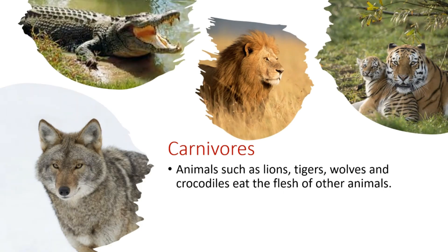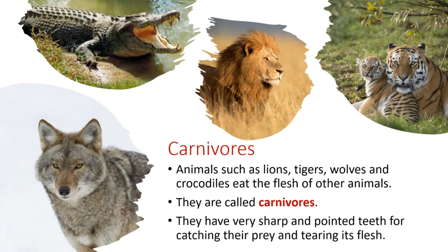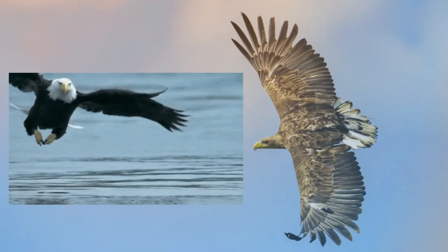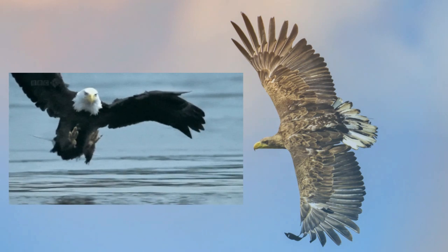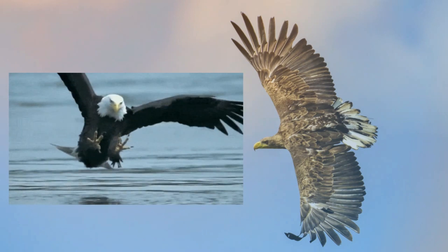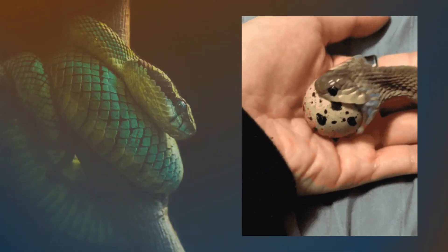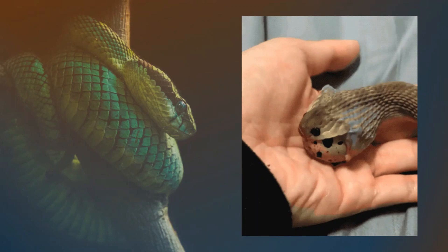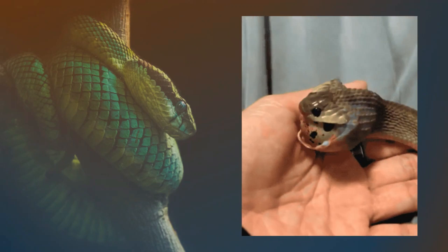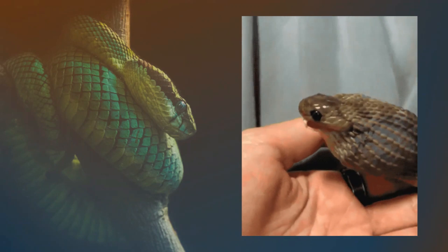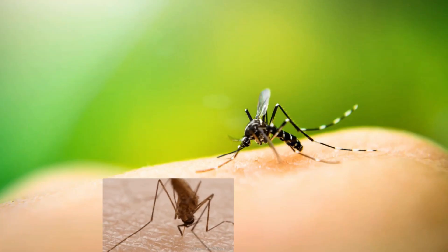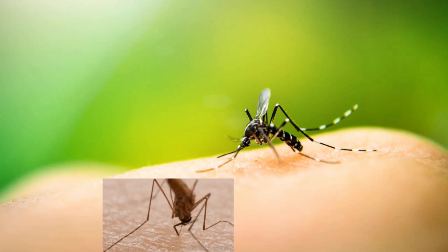Animals such as lions, tigers, wolves and crocodiles eat the flesh of other animals. They are called carnivores. They have very sharp and pointed teeth for catching their prey and tearing its flesh. Carnivorous birds such as eagles and kites have sharp claws and strong hooked beaks to tear the flesh of their prey. Many snakes are poisonous and they can kill a prey with their bite. They can open their mouth very wide to swallow their food. Female mosquitoes have a tube-like mouth to suck blood.